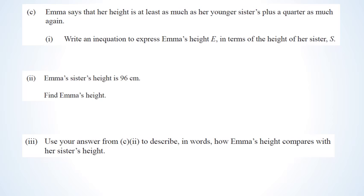Emma says her height is at least as much as her younger sister's plus a quarter as much again. So Emma's height is greater than or equal to her sister's height s plus one quarter of s. This can be left unsimplified as E ≥ s + s/4, which gets an achieved, or simplified since one quarter is 0.25, making it E ≥ 1.25s.